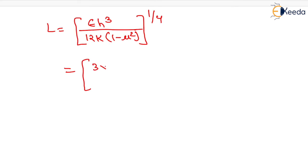That is [3 × 10^5 × 20³ / (12 × 5 × (1 - 0.15²))]^(1/4).